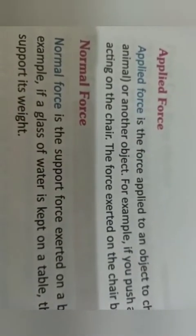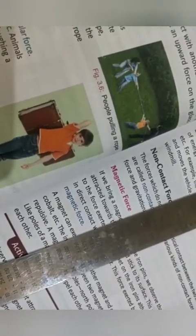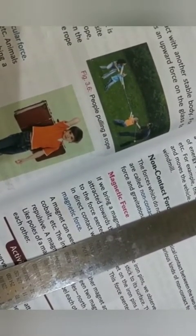The force applied on an object to change its state is called applied force. When a body is in contact with another stable body — for example, placing a scale on a book — the book exerts an upward force to support its weight; this is called normal force. When you play tug of war or pull a cart with a rope, the rope is stretched — that force is called tension.